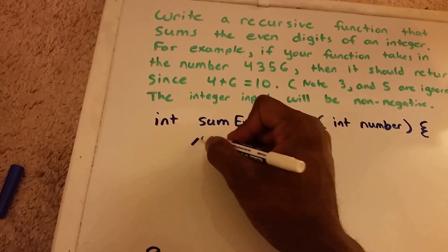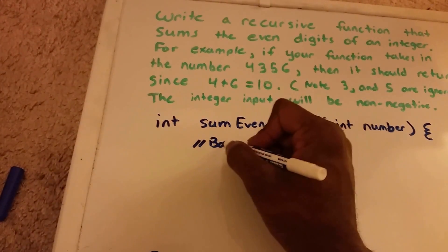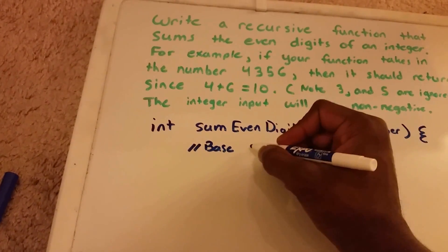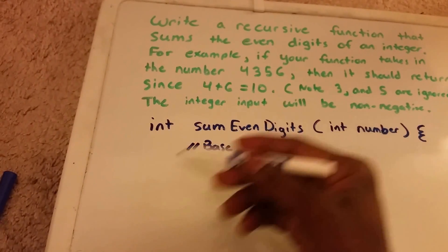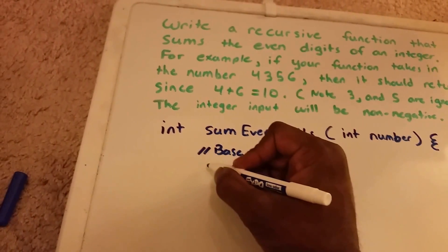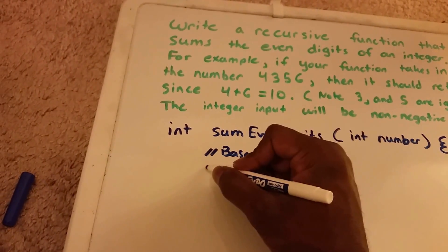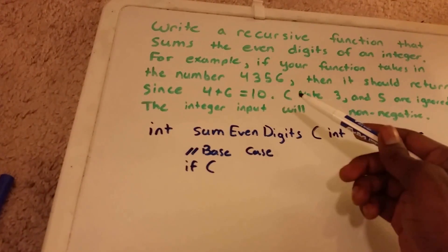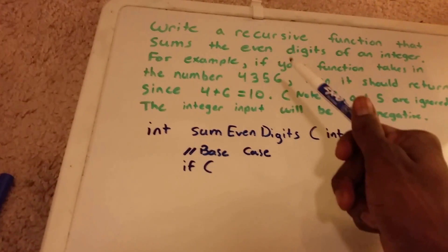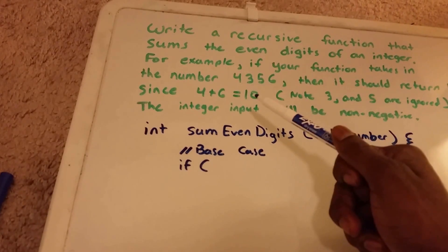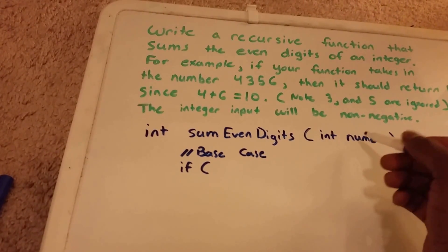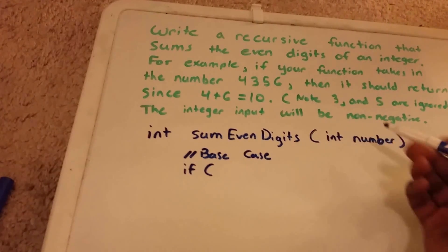Here I'm going to write the base case. We know that our base case will be zero because the lowest number that we can return is zero, since number will be an integer greater than or equal to zero.